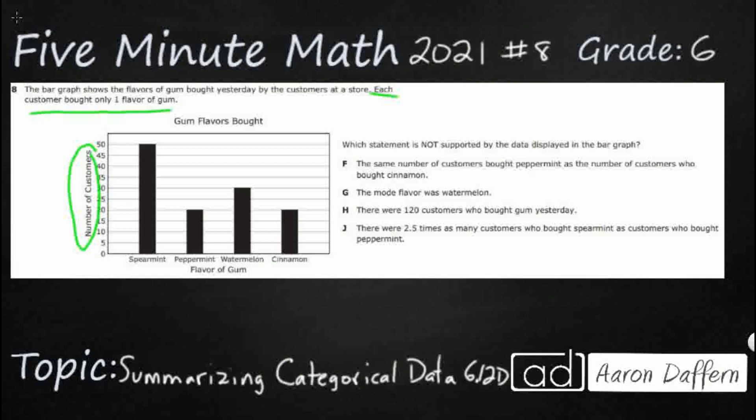Because in a real-world situation, someone could come in and buy spearmint and peppermint, but our questions here are the number of customers, and so we need to make sure we understand that one customer is not buying three different types of gum.